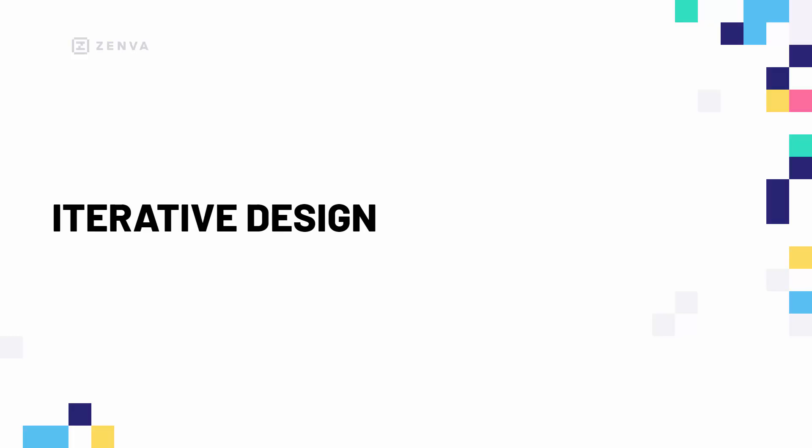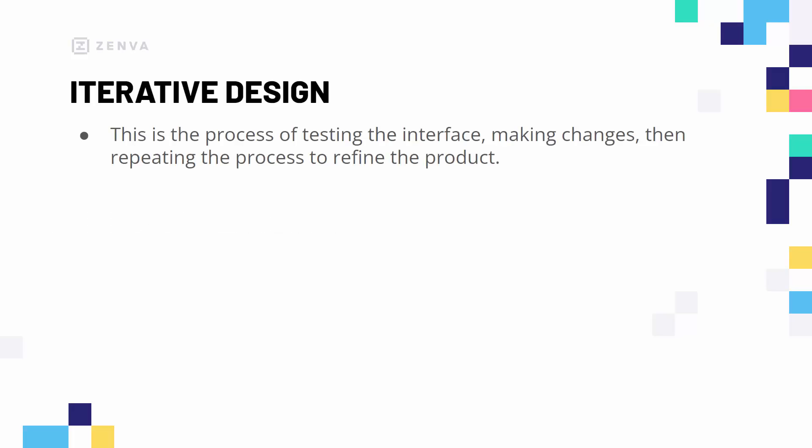In our case we are going to be implementing iterative design during our wireframe phase in order to improve upon our design, look for issues that may occur, and look for additional things we can add. First of all, what is iterative design? Well, basically this is the process of testing the interface, making changes, then repeating that process to refine the product.